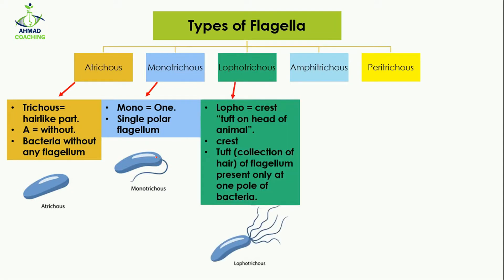The third type is lophotrichus. 'Trichus' again means hair-like structure, and 'lopho' means crest. A crest refers to a collection of hair on the head of animals. So when a collection of flagella is present on one side or one pole of the bacteria, it is known as lophotrichus — it is a tuft of flagella present on just one side of the bacteria.